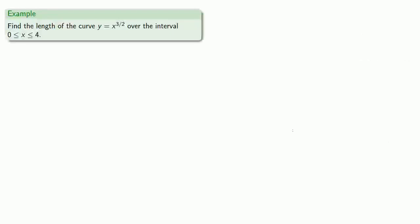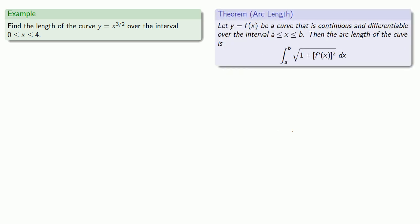For example, let's find the length of the curve y equals x to the power 3/2 over the interval between 0 and 4. So our arc length is going to be the sum of the representative lengths square root 1 plus f prime of x squared. And our sum is going to go from the start of the curve at x equals 0 to the end of the curve at x equals 4.